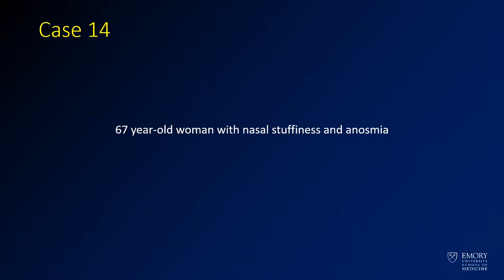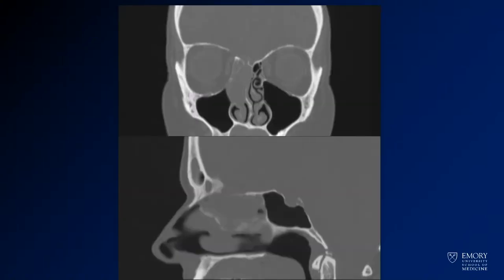Case 14 is a 67-year-old woman with nasal stuffiness and anosmia, or inability to smell. You have coronal and sagittal images from a CT.